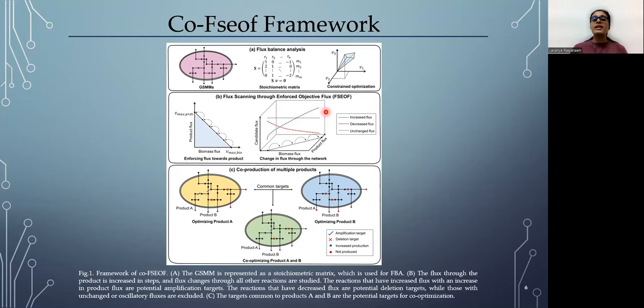And we see that some reactions undergo an increase in flux and these are potential amplification targets. So if we increase the flux through these reactions, we should be able to see increase in the flux through the product. And some undergo decrease in flux, these are potential knockout or deletion targets, and those that undergo no change or oscillatory are discarded.